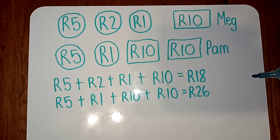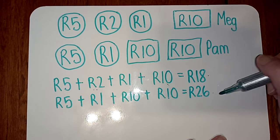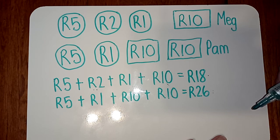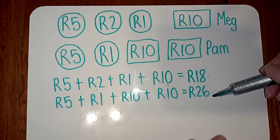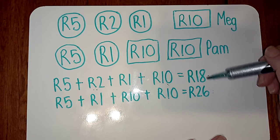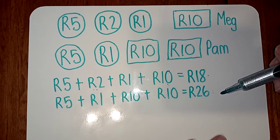Then the next question is, Who has the most money? So Meg has eighteen Rand and Pam is twenty six Rand. Yes, Pam has more money than Meg. Twenty six is much more than eighteen. So Pam has the most money.